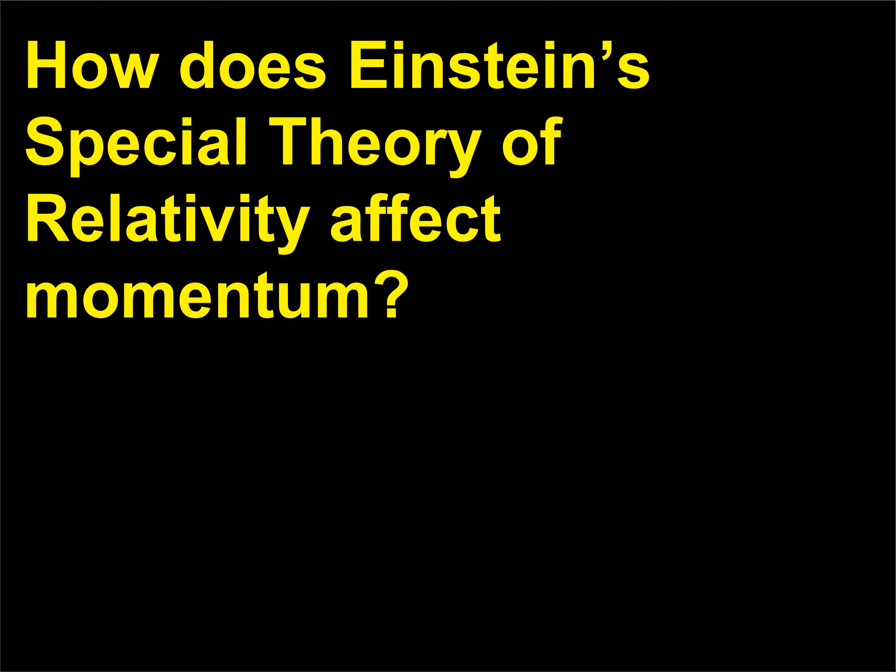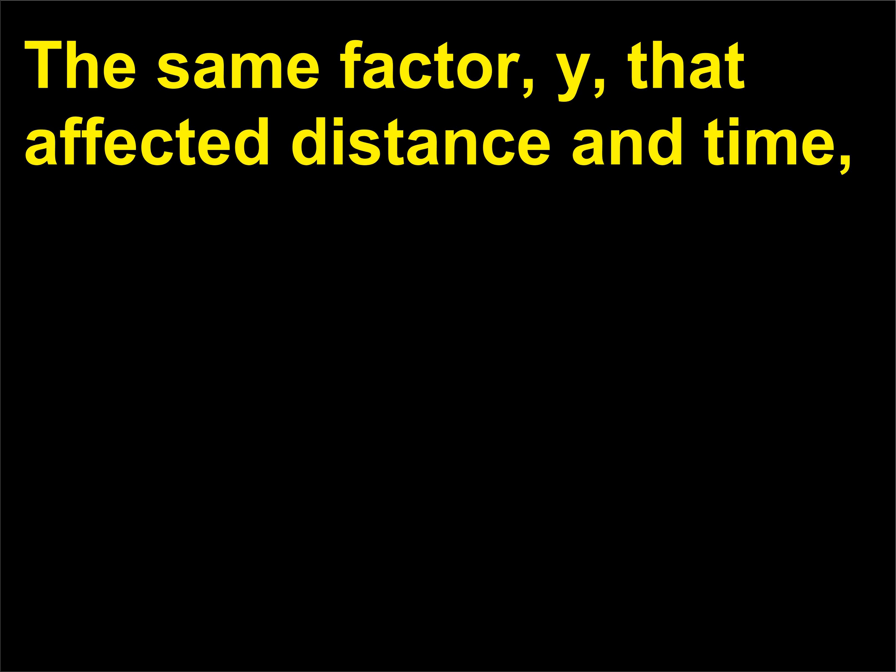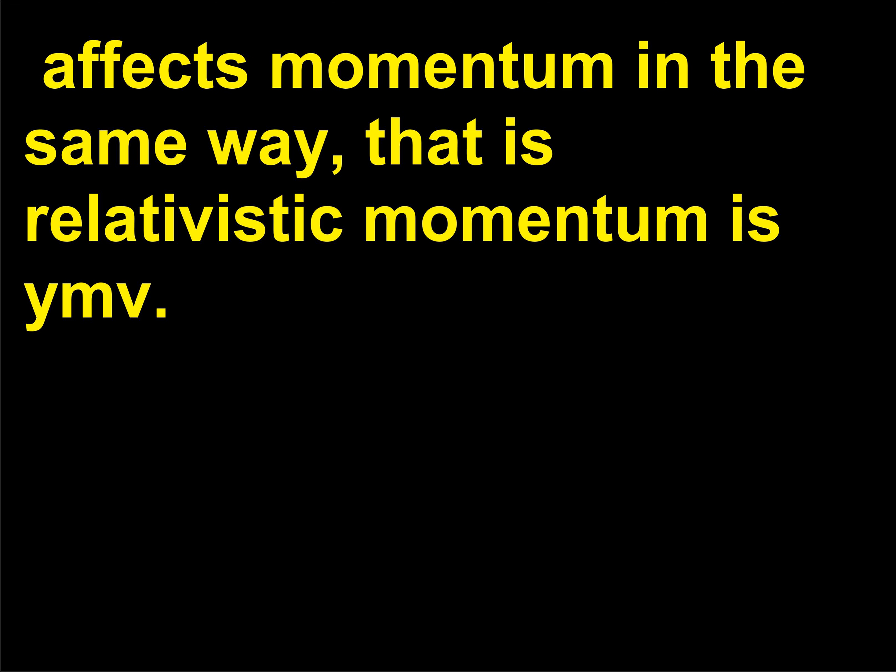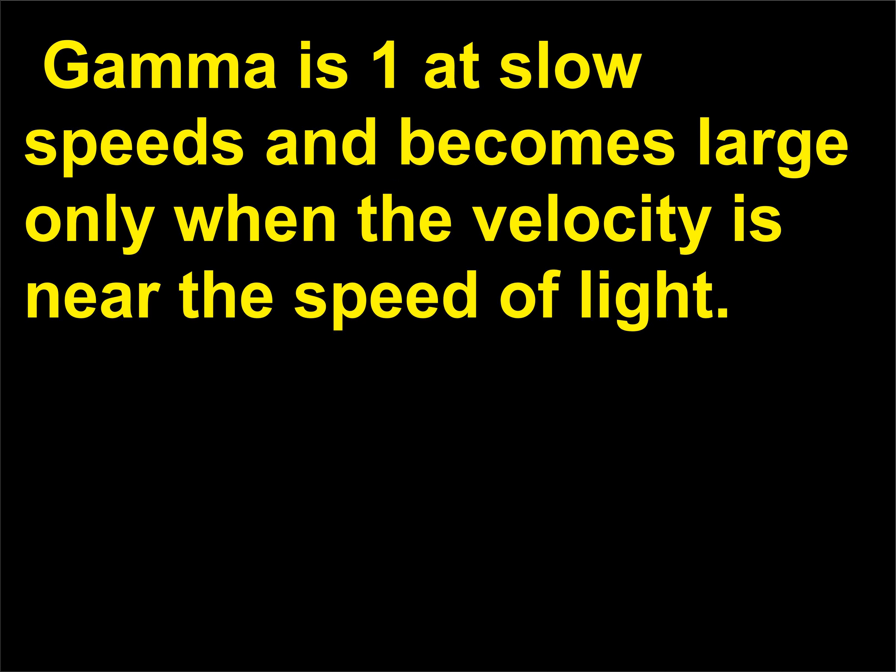How does Einstein's special theory of relativity affect momentum? The same factor gamma (γ) that affected distance and time also affects momentum in the same way — that is, relativistic momentum is γmv. Gamma is one at slow speeds and becomes large only when the velocity is near the speed of light.